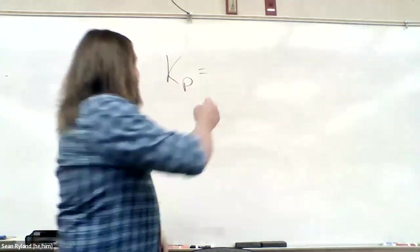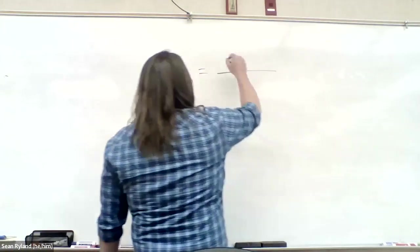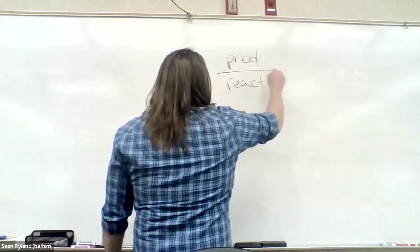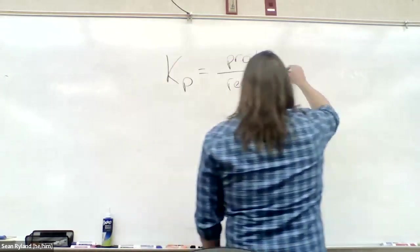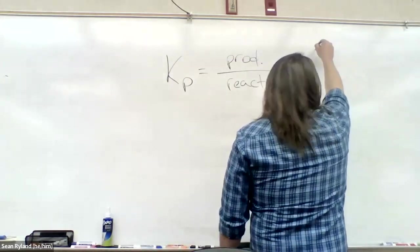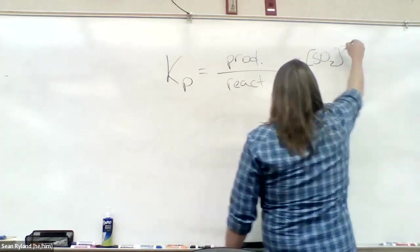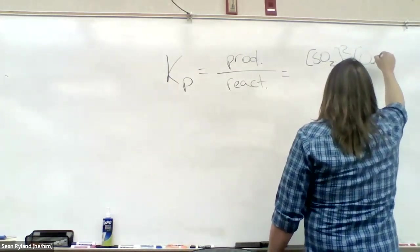And what's the first rule? I already heard it. Products over reactants. So in this case, that means we're going to see SO2 squared oxygen. Actually, we're dealing with pressures, not concentrations. Pressure SO2 squared, pressure O2, not squared, pressure SO3 squared.